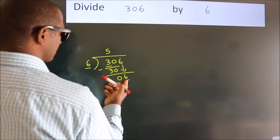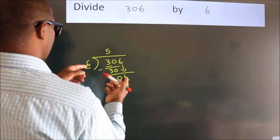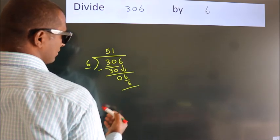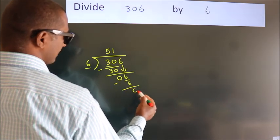When do we get 6? In 6 table. 6 times 1, 6. Now, we subtract. We get 0.